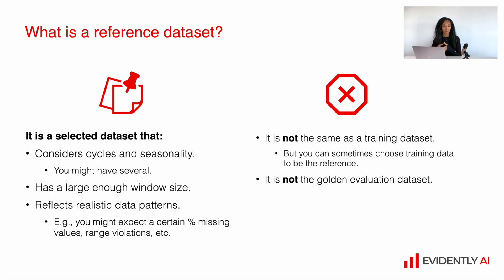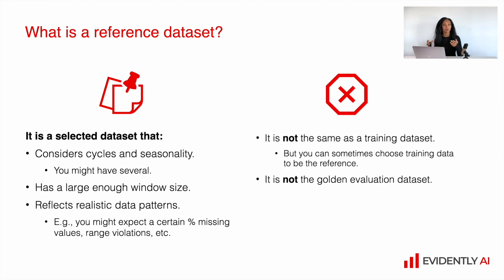This is why you might have several reference datasets if you have several cycles — for example, a yearly cycle, a weekly cycle, and maybe a quarterly cycle. In that case, it makes sense to have at least three different reference datasets. It should have large enough data so that you can really derive statistics from it — if you include only five rows, you cannot derive any meaningful statistics. And it should reflect realistic data patterns, not an idealized dataset but real reference data.